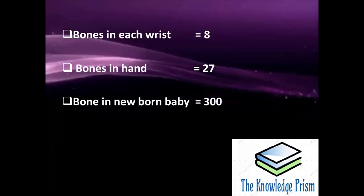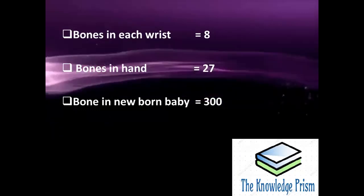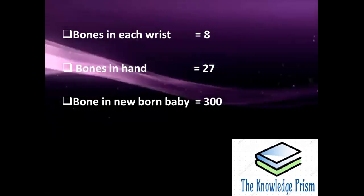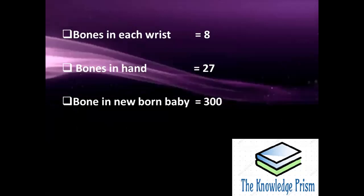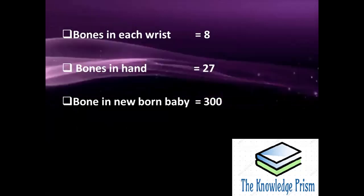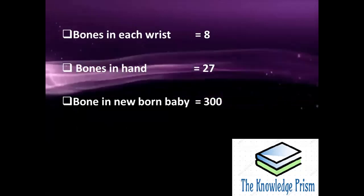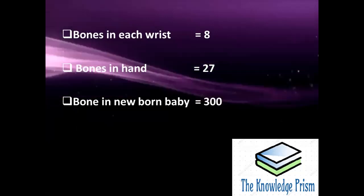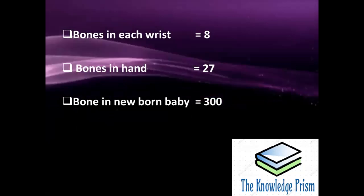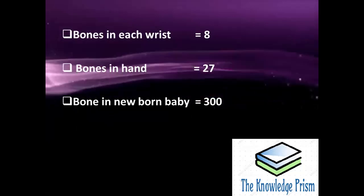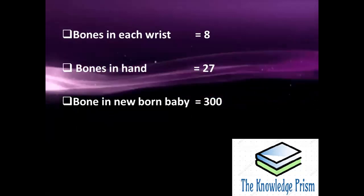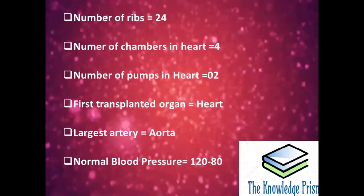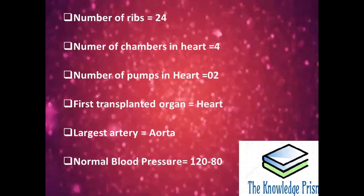Bones in each wrist are 8. Bones in hand are 27. Bones in a newborn baby are 300. Number of ribs in human body are 24.